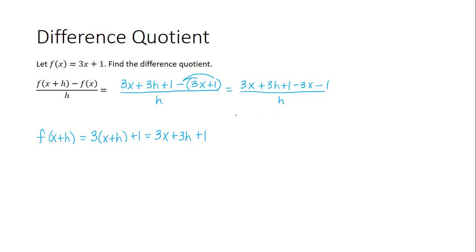When we simplify the numerator, notice that the 3x cancel out, the 1s cancel out, and we're left with 3h divided by h. We can divide out h to get just 3.